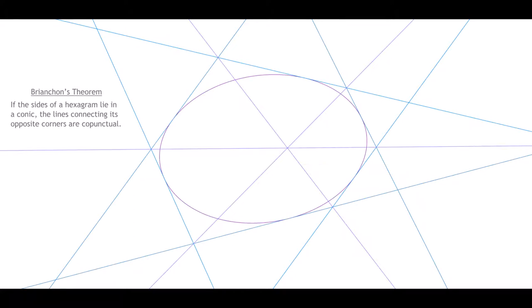So in the polar theorem to Pappus, do the six lines in two points also all lie tangent to some kind of degenerate conic? Yes, indeed. They are all tangents to the two ends of an ellipse so narrow it is flattened out to a mere line segment, or to an equally narrow hyperbola.